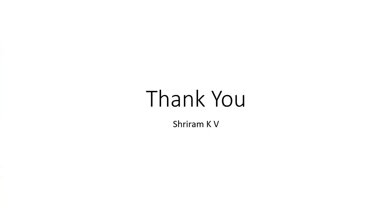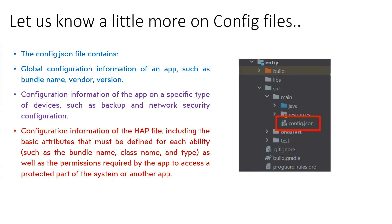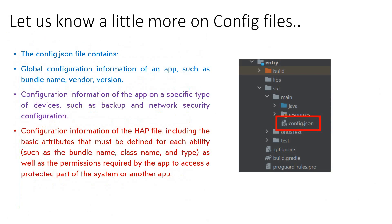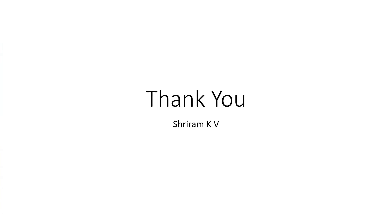Overall, we have covered a lot of content today about app fundamentals. It starts with the .app package containing HAP files — entry.hap, feature.hap, and pack.info. Then we went to the library files, learned what config.json is, and then covered resources. All of these have been covered in this session. I hope it was useful — if you have any questions, please type in the chat box. Thank you.